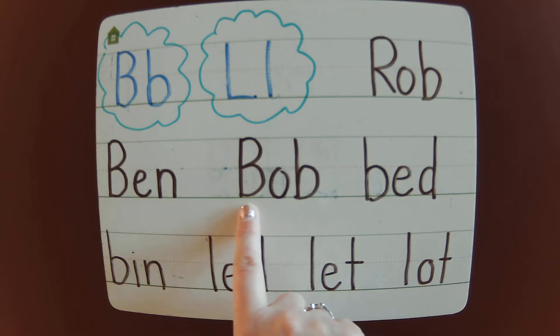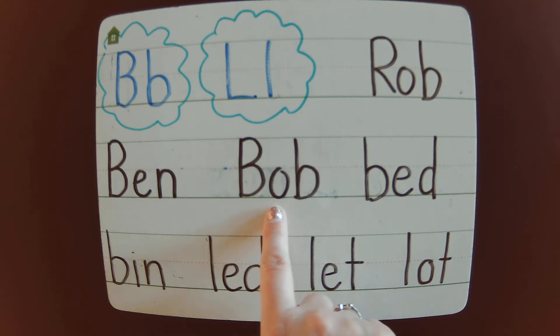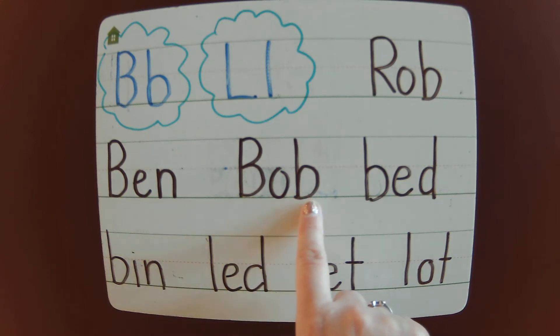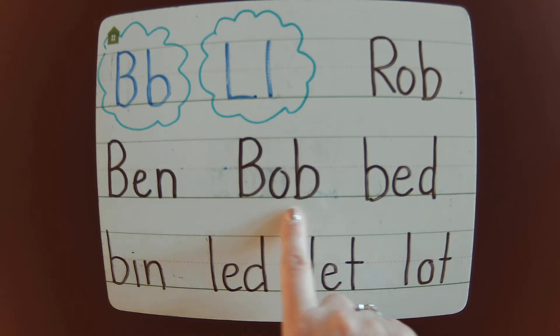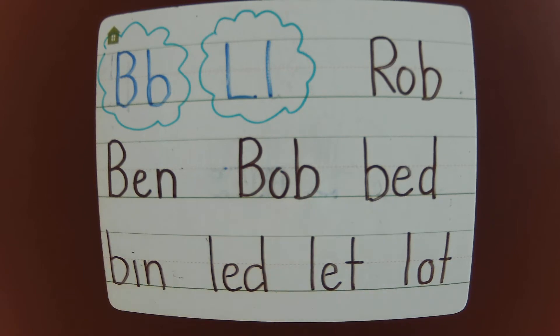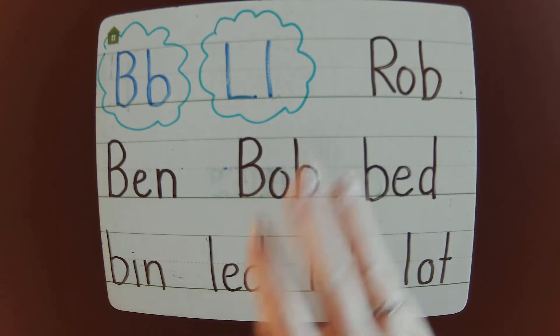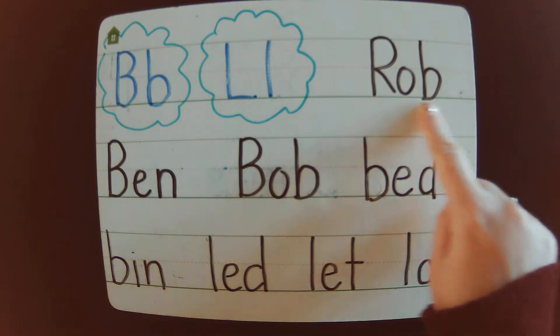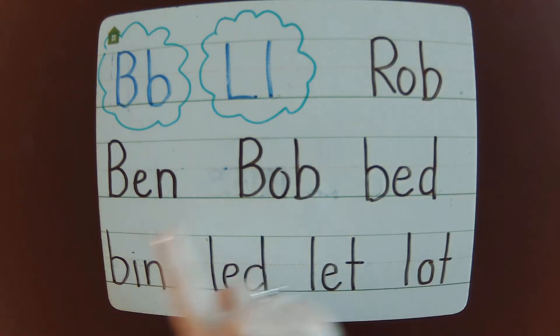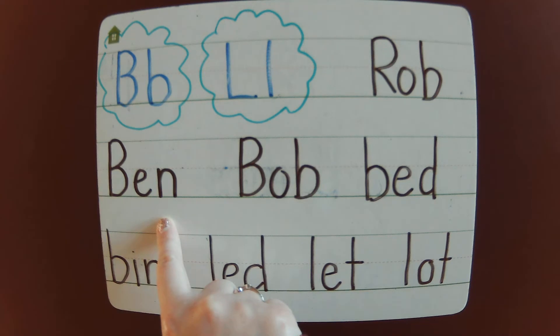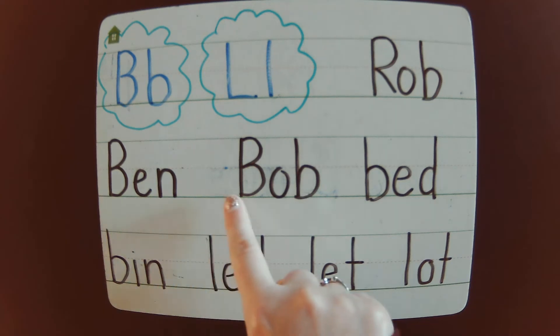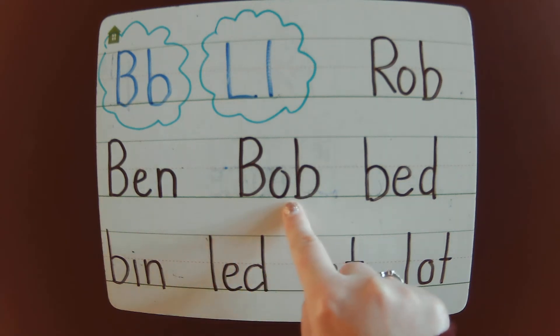And the last name? B. Ob. Bob. So, there were three characters in this story: Rob, Ben, and Bob.